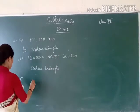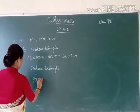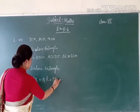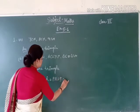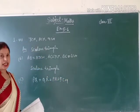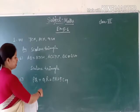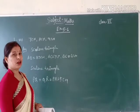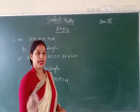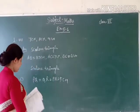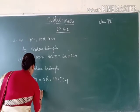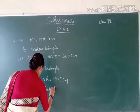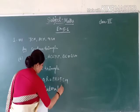Now next: triangle PQR where PQ is equal to QR is equal to PR, all equal to 5 cm. It means triangle PQR has three sides — PQ, QR, and PR — all equal to 5 cm. When three sides are equal, this triangle is an equilateral triangle.